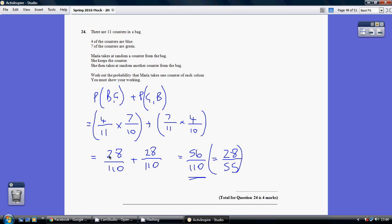For adding fractions, if you've got a common denominator, add the numerators. We get 56 over 110. That's full marks, but if you chose to simplify it down to this, that's fine.